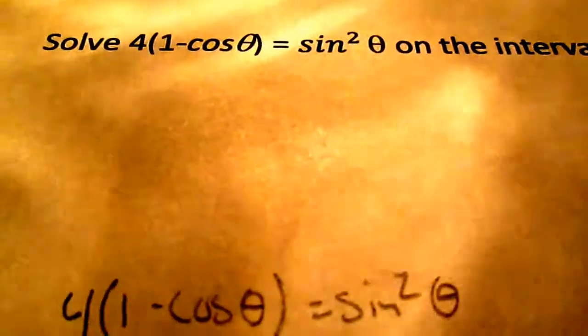And if we go back, we want to solve for cosine. So let's rewrite it. 4 times 1 minus cosine theta equals 1 minus cosine squared theta.